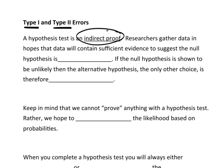Researchers gather data in hopes that the data will contain sufficient evidence to suggest the null hypothesis is false. If the null hypothesis is shown to be unlikely or false, then the alternative hypothesis, the only other choice, is therefore more likely.